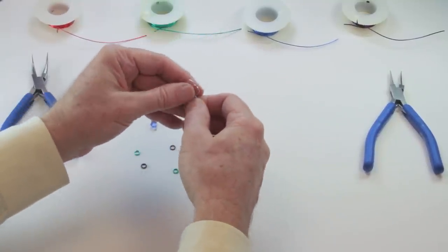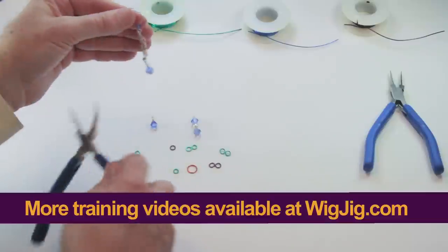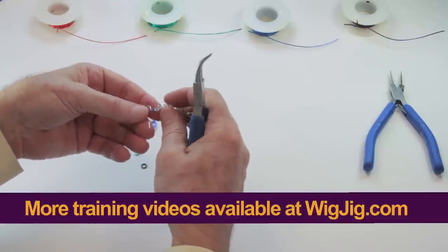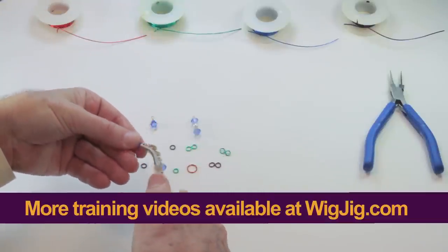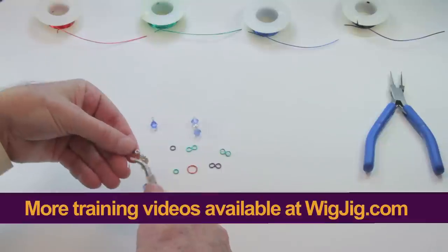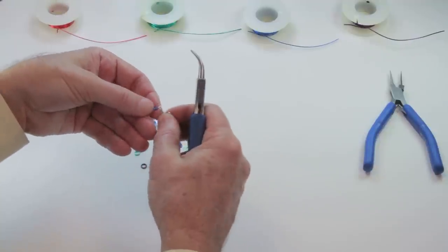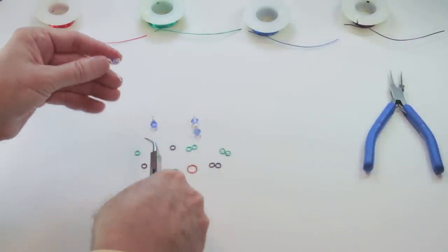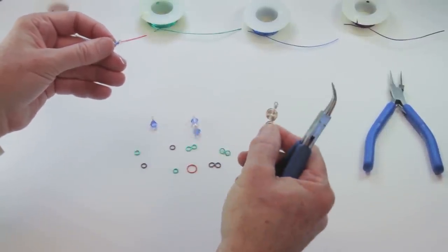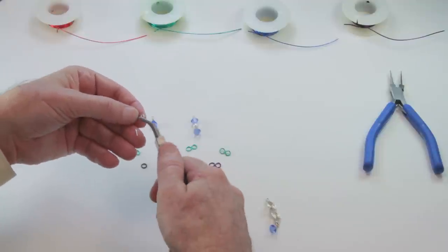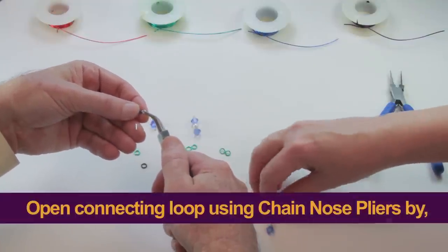When you say component, you mean like a wire component and a bead? Yes. Or wire, just wire or just beads either. In this one, the ear wire has an open loop at the top, so we can open and close it like that. So the open loop is on the ear wire, not on the component in this particular earring.